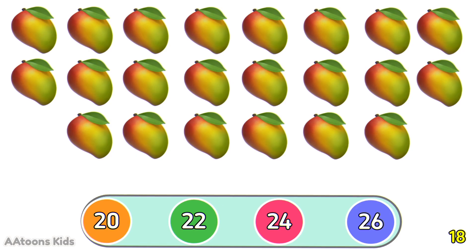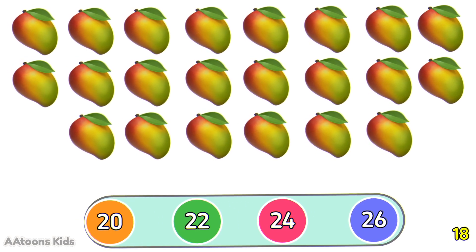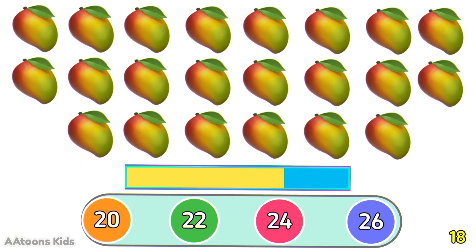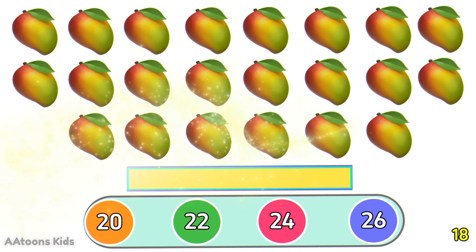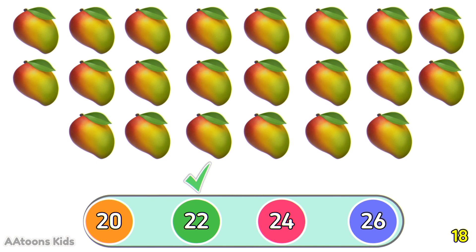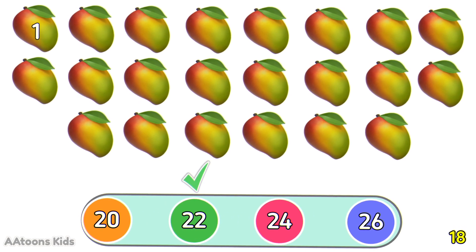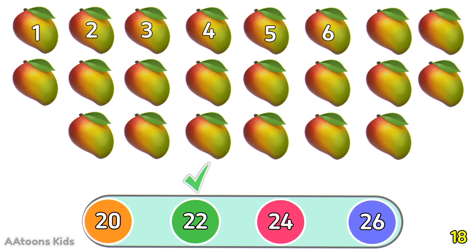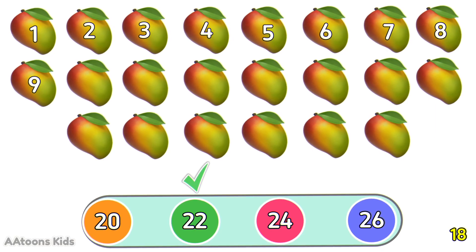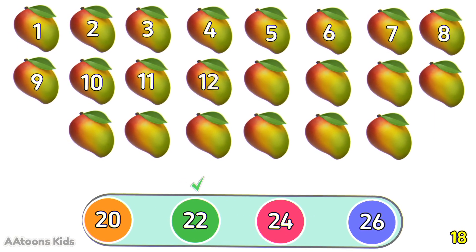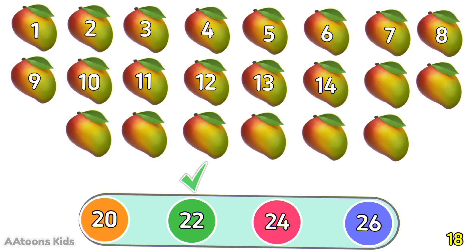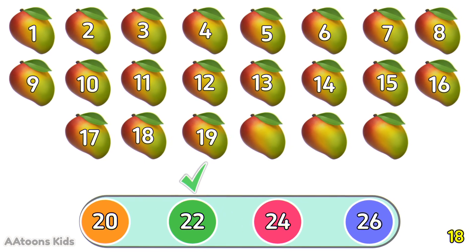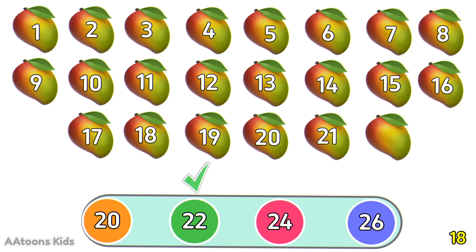How many mangoes can you see in the picture? Let's count them! 22 mangoes. Let's count them: 1, 2, 3, 4, 5, 6, 7, 8, 9, 10, 11, 12, 13, 14, 15, 16, 17, 18, 19, 20, 21, 22. 22 mangoes.